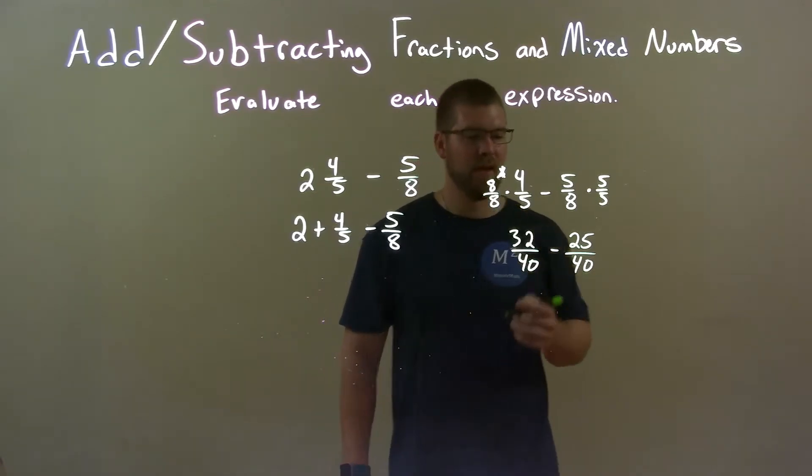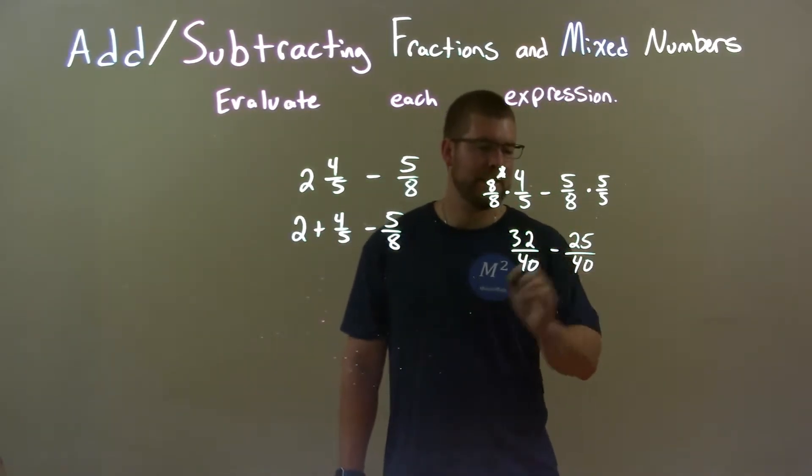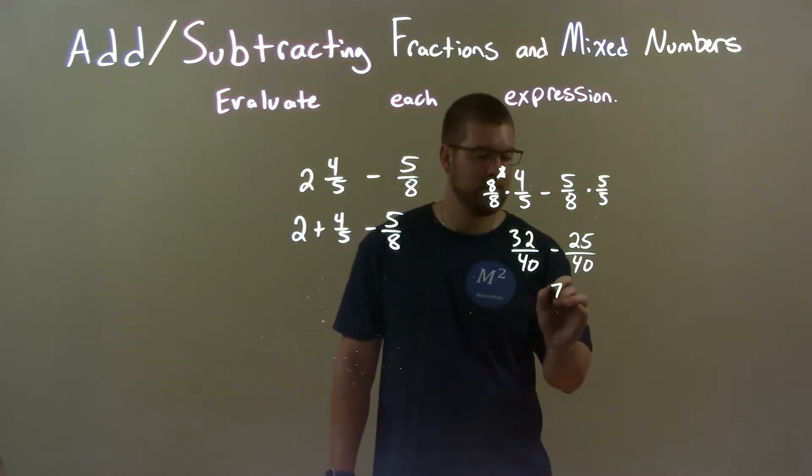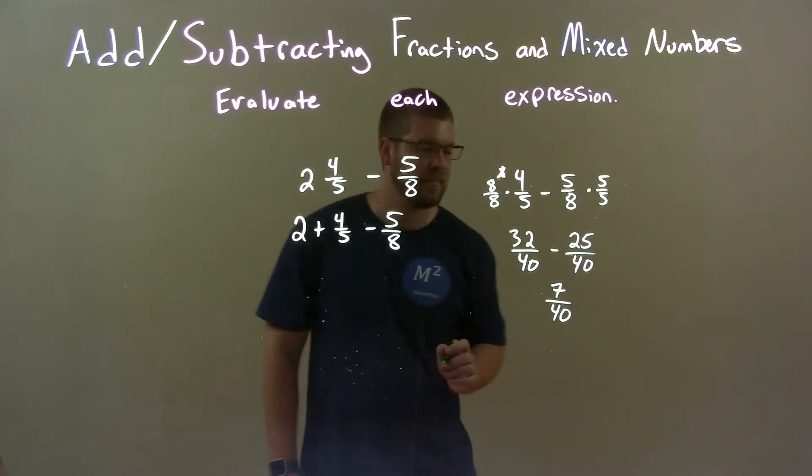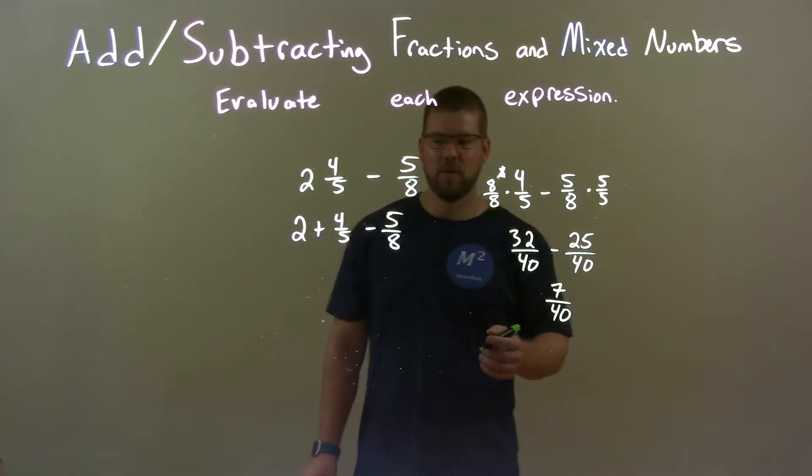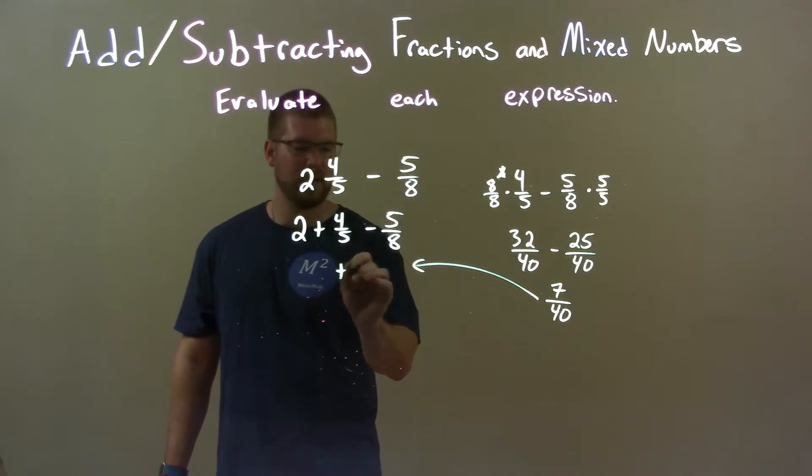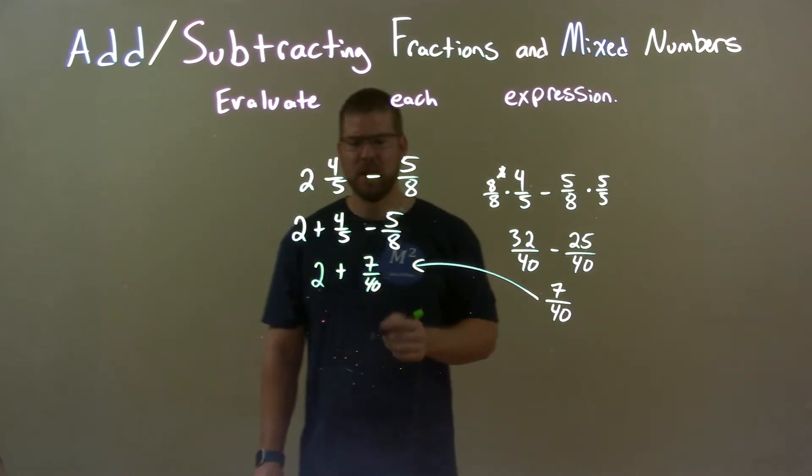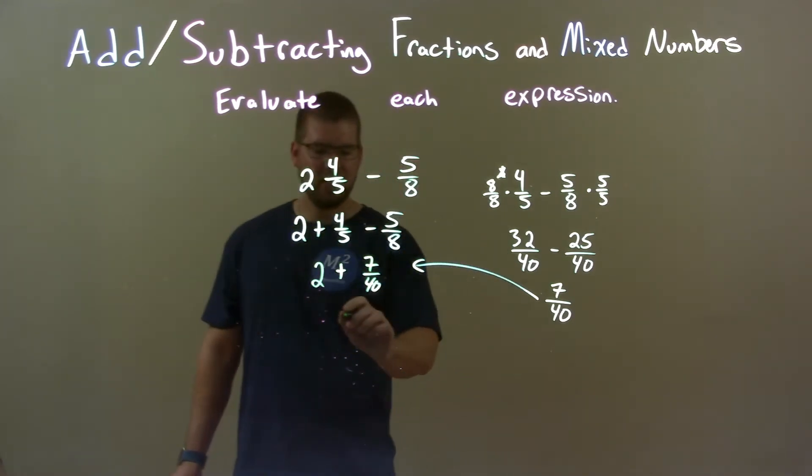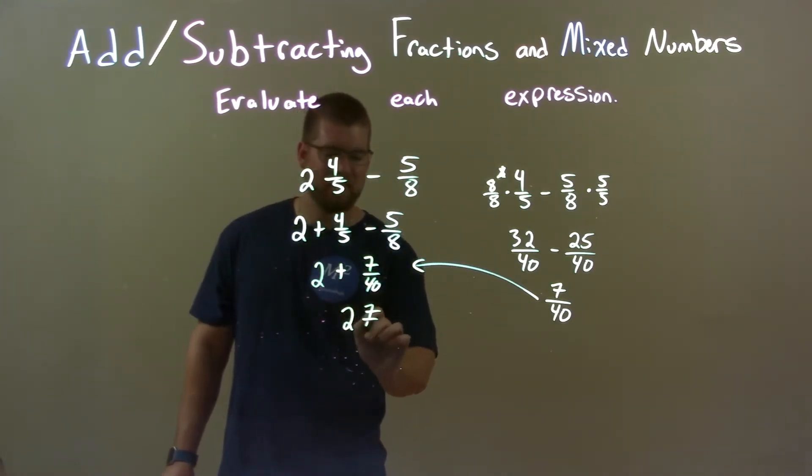Base is the same, so we worry about the numerator. 32 minus 25 comes out to be 7, so now we have 7/40. We can bring that over here because that's combining these two together. Now I'm going to bring down the 2, and 2 plus 7/40 is just 2 and 7/40.